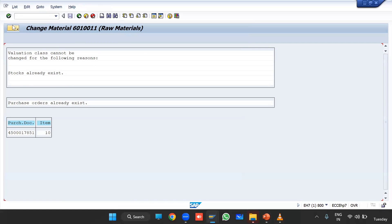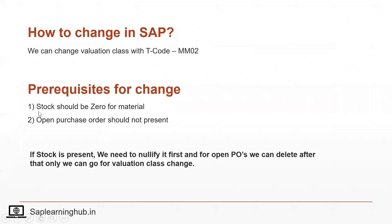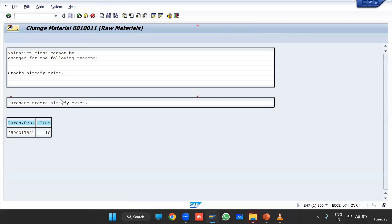For changing the valuation class there are some prerequisites. The first prerequisite is that stock should be zero for this material, and the second is that no open purchase order should be present. That is why this error is coming.